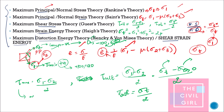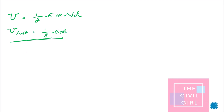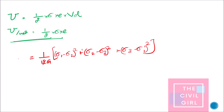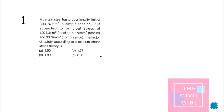For maximum distortion energy theory, the formula involves (1/12G). The key formula to remember is: sigma_t² = sigma_1² − sigma_1·sigma_2 + sigma_2². Note that Poisson's ratio is not present in this formula.